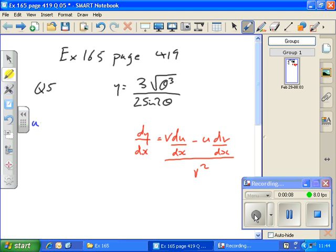Let u equal 3 times the square root of theta cubed. So I'd have to rewrite that. u equals 3 times theta to the 3 over 2 because the square root means there's a 2 underneath in the fraction.